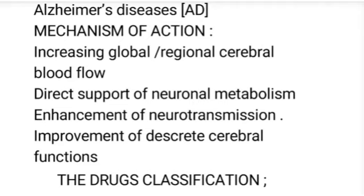The mechanism also includes direct support of neural metabolism, giving direct metabolic support to the neurons present in the brain to enhance the ability to remember. Enhancement of neurotransmissions is also key — the main deficit is a lack of neuronal coordination, which causes mental disorders. Every neuron should work properly through the release of neurotransmitters.